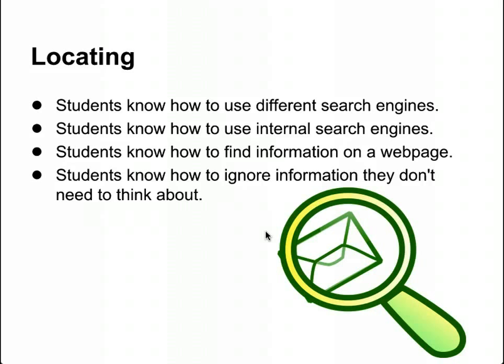If not, they back out and go to a different search task to find more information. One of the most challenging parts of locating is that students need to know how to ignore specific parts of information. There's a lot of distractor information that students don't need to consider as they're reading online, and that's something we need to keep track of.